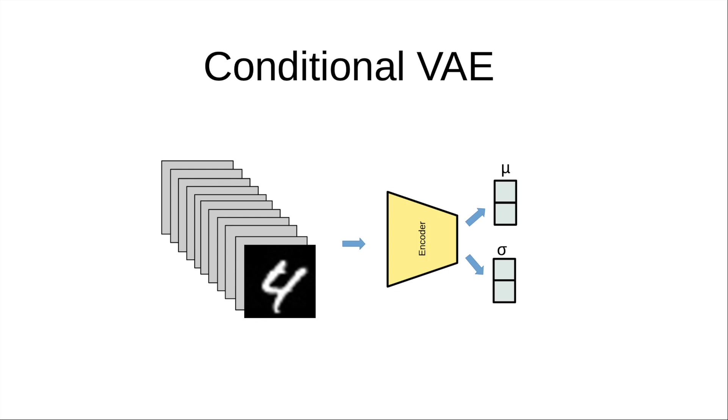Up till now, we have been able to generate data, but we don't have any control over what the network generates. Given that we might have class labels available with us, like in the case of digits, let's see how we can conditionally generate data, so that when we ask the network to generate an image of a particular class, it indeed generates an image of that class only. To achieve this, we'll add label information in the encoder as well as decoder. Instead of the encoder learning q(z|x), it'll now learn q(z|x,y).